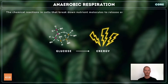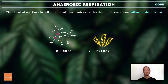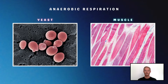Anaerobic respiration is the term for the chemical reactions in cells that break down nutrient molecules to release energy without using oxygen. It's a less efficient process than aerobic respiration because it releases much less energy per molecule of glucose — over 20 times less in fact. Anaerobic respiration occurs in yeast cells and muscle cells during vigorous exercise.